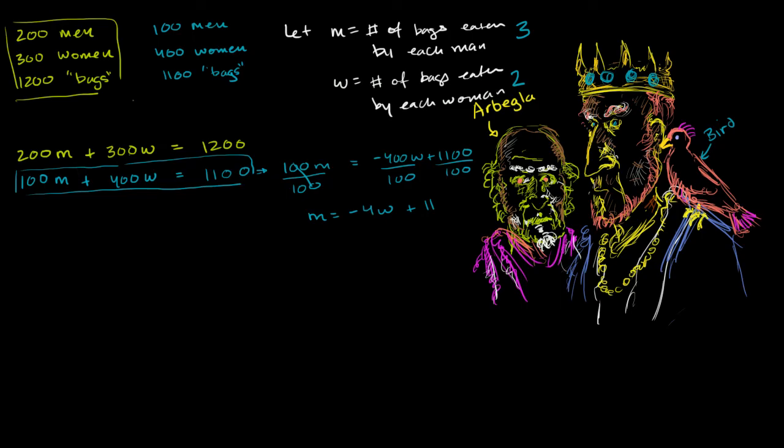Why don't we take this constraint and substitute it back for m in the first equation. And then we will have one equation with one unknown. And so the king starts to write at the bird's direction, 200. So he's looking at that first equation now and instead of putting an m there,